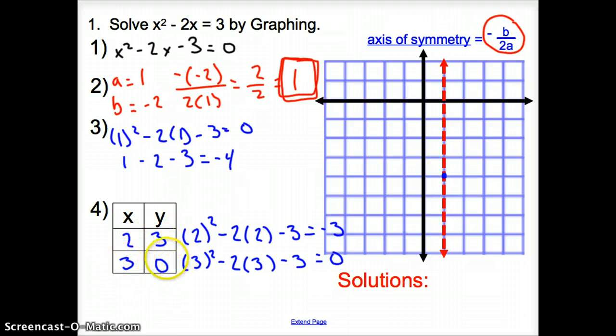Now we graph both of those coordinate points at 2, negative 3. So from our origin, we go over 2, down 3. This should be a negative 3. Sorry. This should be a negative 3 because of that negative 3. And then we have 3, 0. So we go over 3. We stay right at 0.